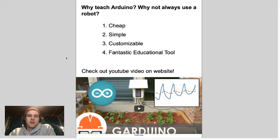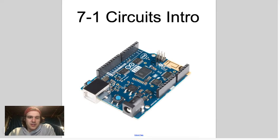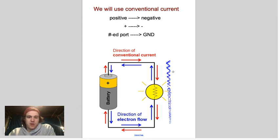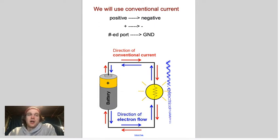On your Arduino, every Arduino has numbered ports — that's the positive side. Some ports say 'GND,' which stands for ground, and those represent the negative side of the circuit. So numbered ports are your positive side, ground is your negative side. We'll be using conventional current in this class.